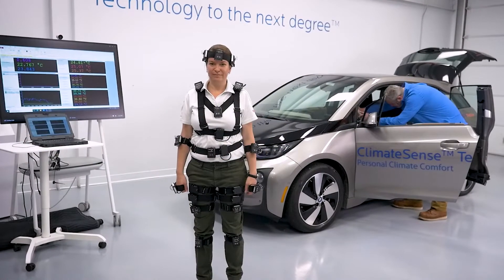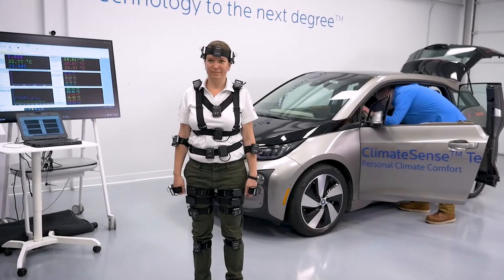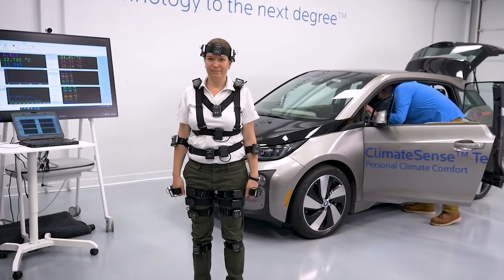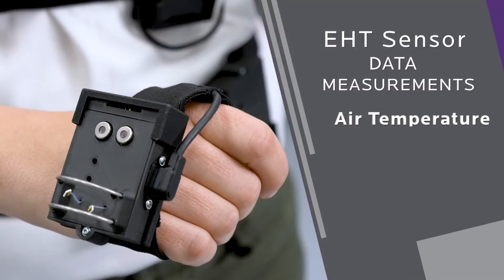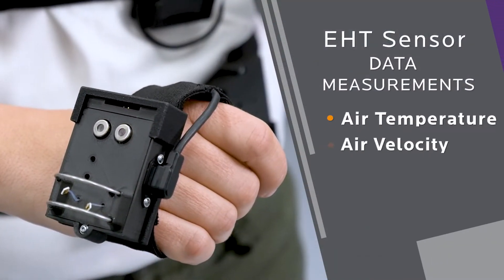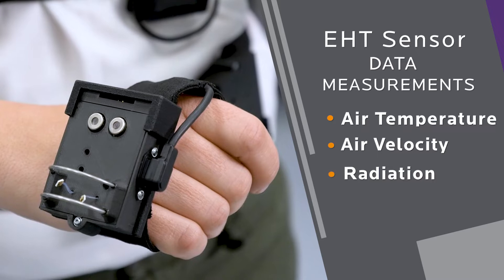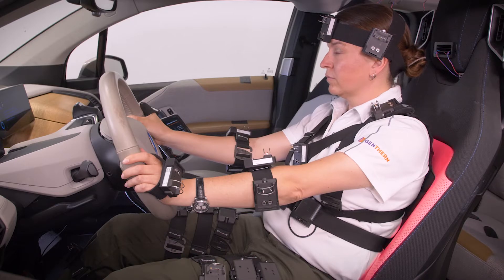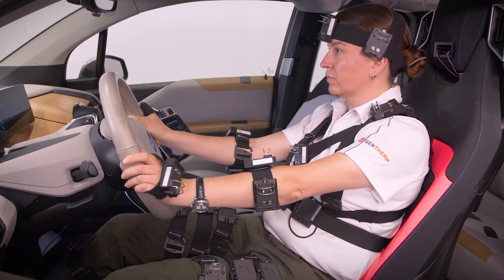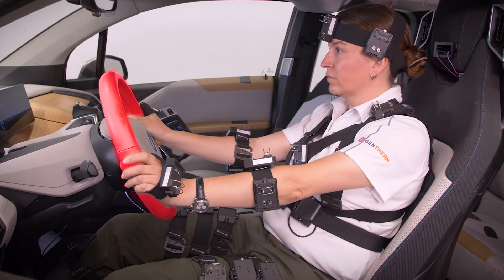The measurement system uses a combination of wearable equivalent homogeneous temperature or EHT sensors and surface temperature sensors. Each of the 22 EHT sensors captures local air temperature, air velocity, and radiation around the occupant. The 12 surface temperature sensors measure the contact surface temperatures of areas such as the seat and the steering wheel in the vehicle.